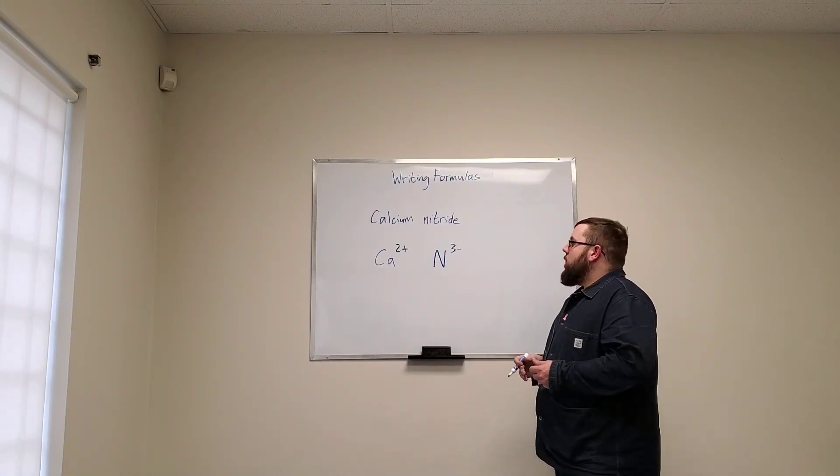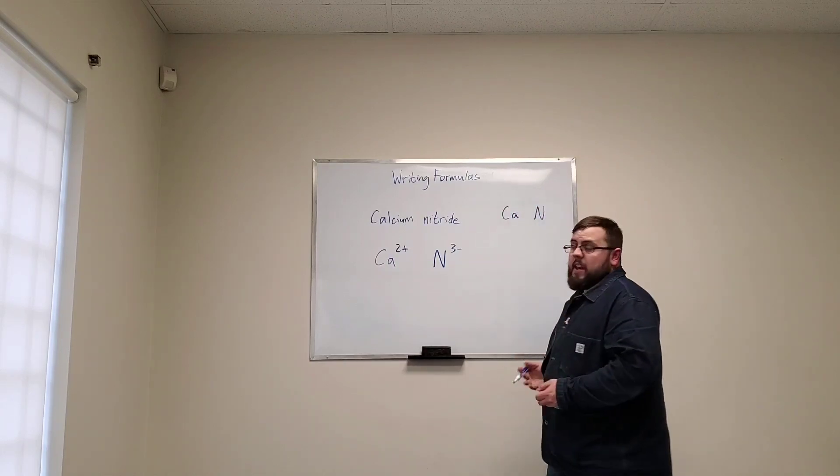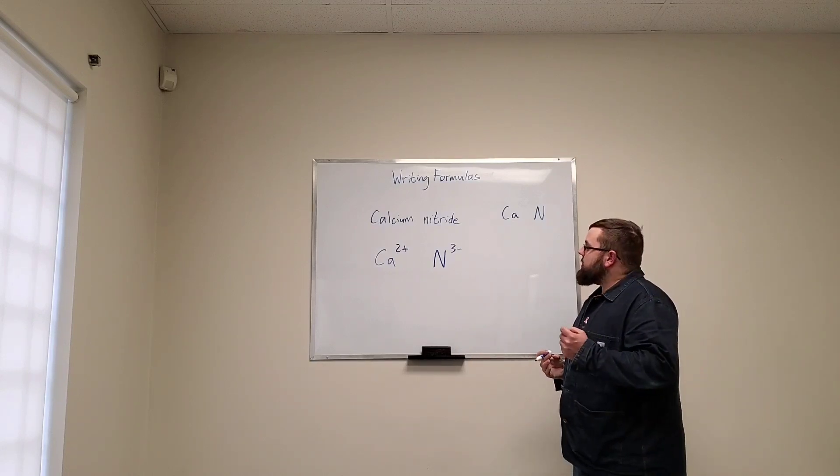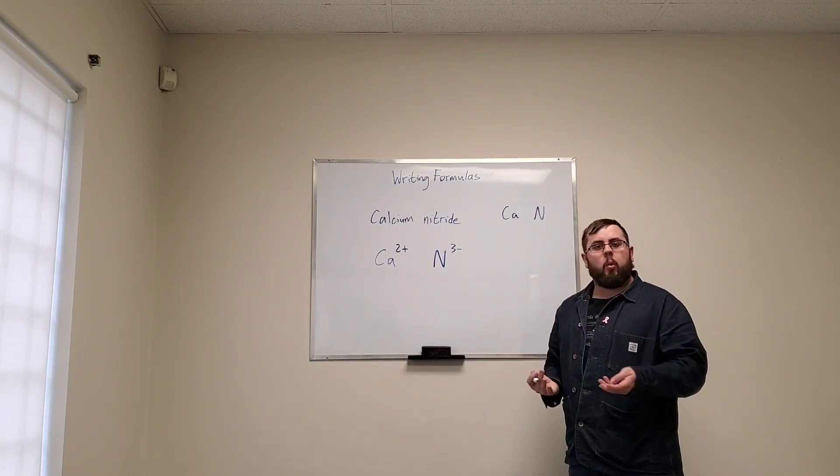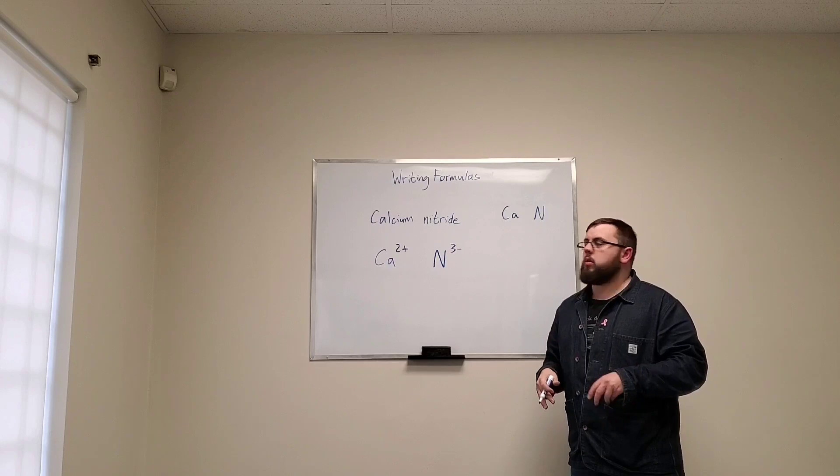Alright, so we know for sure that our formula is going to be Ca N, but we need to make sure that the charge balances out. The whole point of making a compound is so that your oxidation numbers, your ion charges, neutralize—it becomes zero.